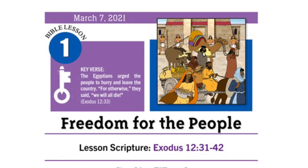Good morning children and welcome to Sunday school. Today our lesson is coming from the upper elementary book for grades four through six. We are beginning a new quarter today. We will be doing Bible lesson number one in the spring quarter. The title of our lesson today is Freedom for the People.